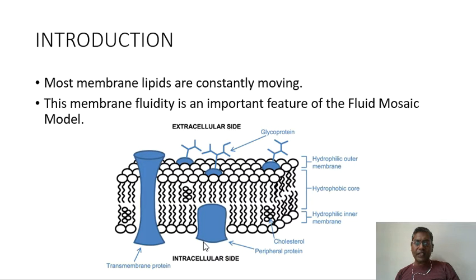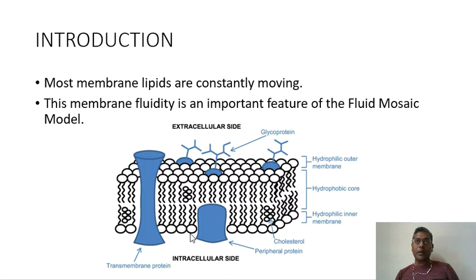A fluid is a substance that continually deforms under an applied shear stress or external force. Because of the presence of cholesterol, the melting temperature of the plasma membrane — if it goes above or below — is actually brought back and stabilized by the cholesterol molecules. Now we shall understand how other molecules also play a role in fluidity.